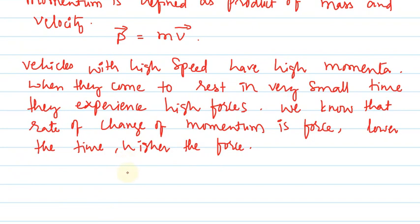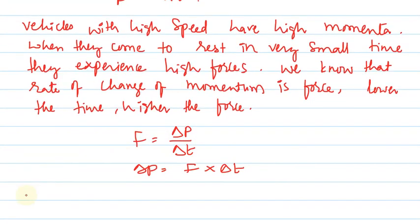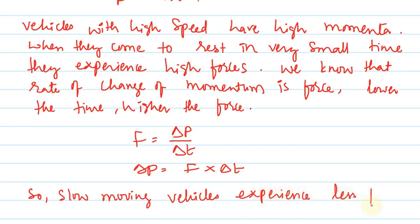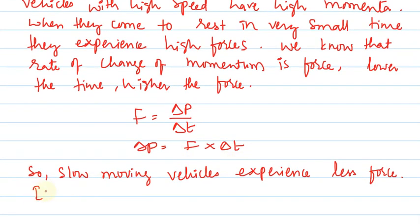We can write F is equal to delta p upon delta t, so F is inversely proportional to delta t. We can write delta p is equal to F into delta t. So here, lesser time, force applied greater; greater time, force applied lesser. So slow moving vehicles experience less force.